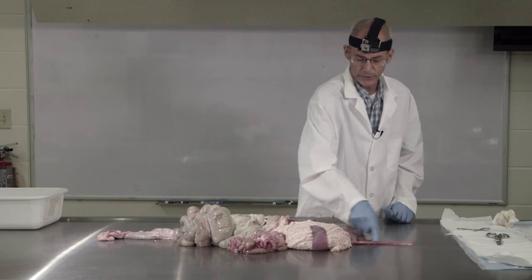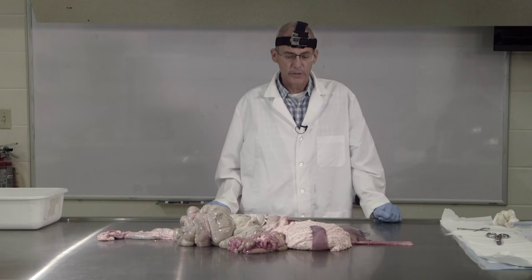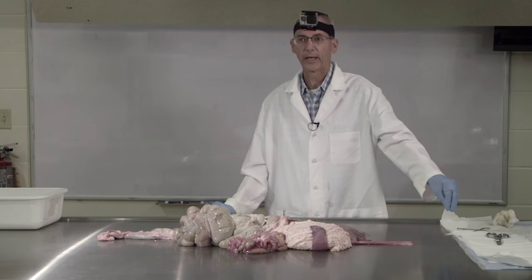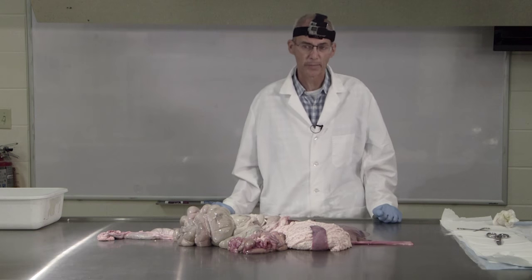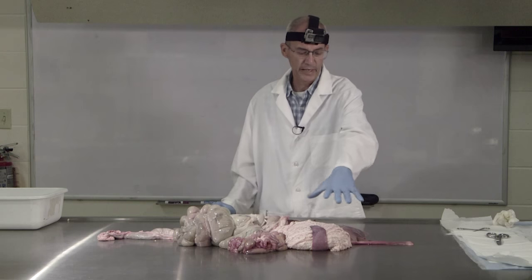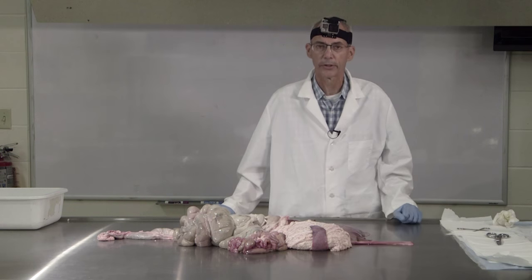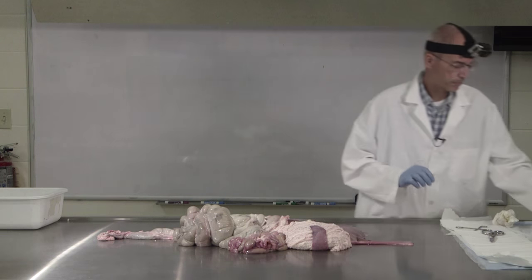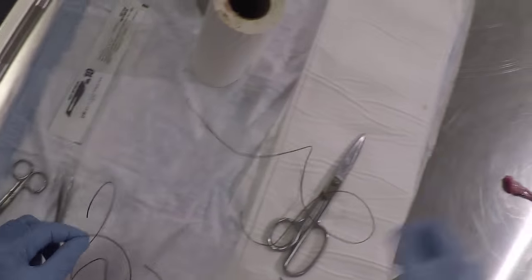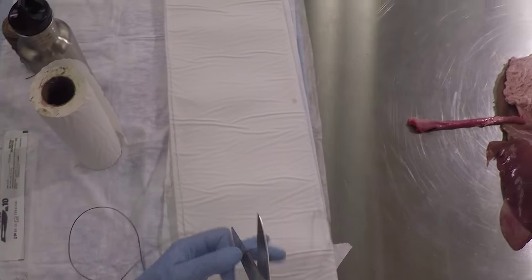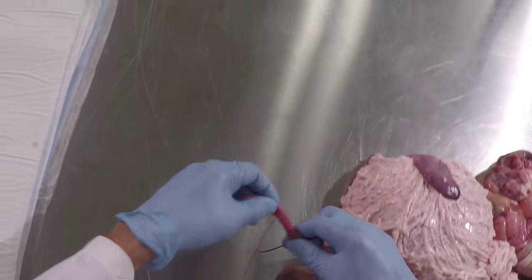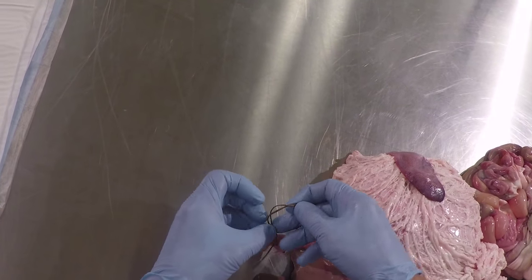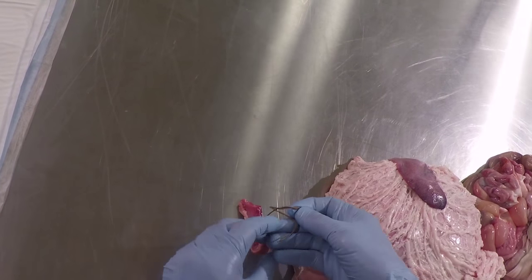We'll start up at the stomach end with the esophagus. The esophagus doesn't really contribute anything to digestion — it's merely a way of moving food from the mouth down to the stomach, passing through the thoracic cavity where the lungs and heart are located. It's essentially just a conduit. I'm going to tie a string around it so that digestive material inside doesn't leak out while we work on dissecting this.